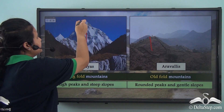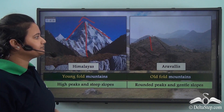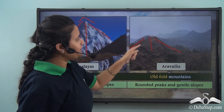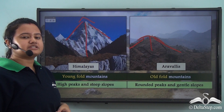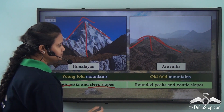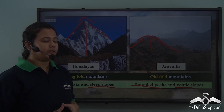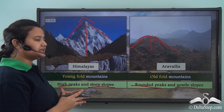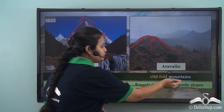The Himalayas have steep slopes and a conical peak or summit, whereas the Aravalis have gentle slopes and rounded peaks rather than a conical summit. So the difference is that the Himalayas have high peaks and steep slopes, while the Aravalis have rounded peaks and gentle slopes.